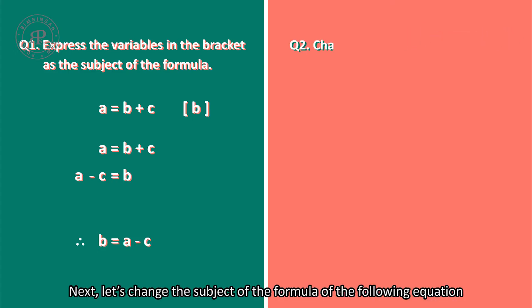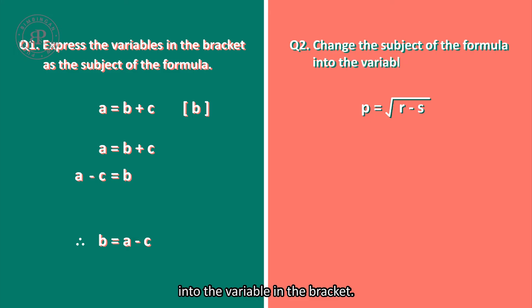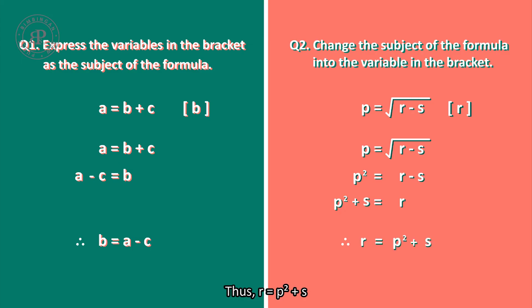Next, let's change the subject of the formula of the following equation into the variable in the bracket. P equals the square root of R minus S. P squared equals R minus S. P squared plus S equals R. Thus, R equals P squared plus S.